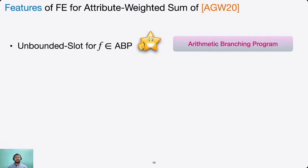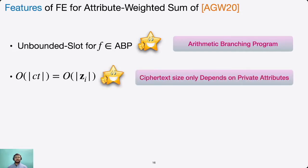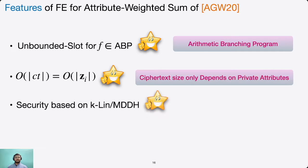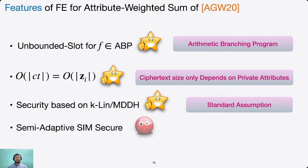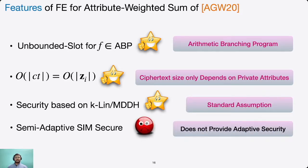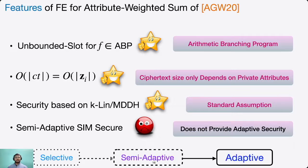AGW20 proposed functional encryption schemes for attribute-weighted sum functionality with notable features: unbounded slots for weight functions that are arithmetic branching programs, ciphertext size depending only on the private part of the message, and security based on the K-Lin or MDDH assumption, which are standard assumptions. However, security is only semi-adaptive simulation security. Due to GKW16, selective security is equivalent to semi-adaptive security, but existing transformations from semi-adaptive to adaptive security require much more expressive functionality, specifically general circuits.